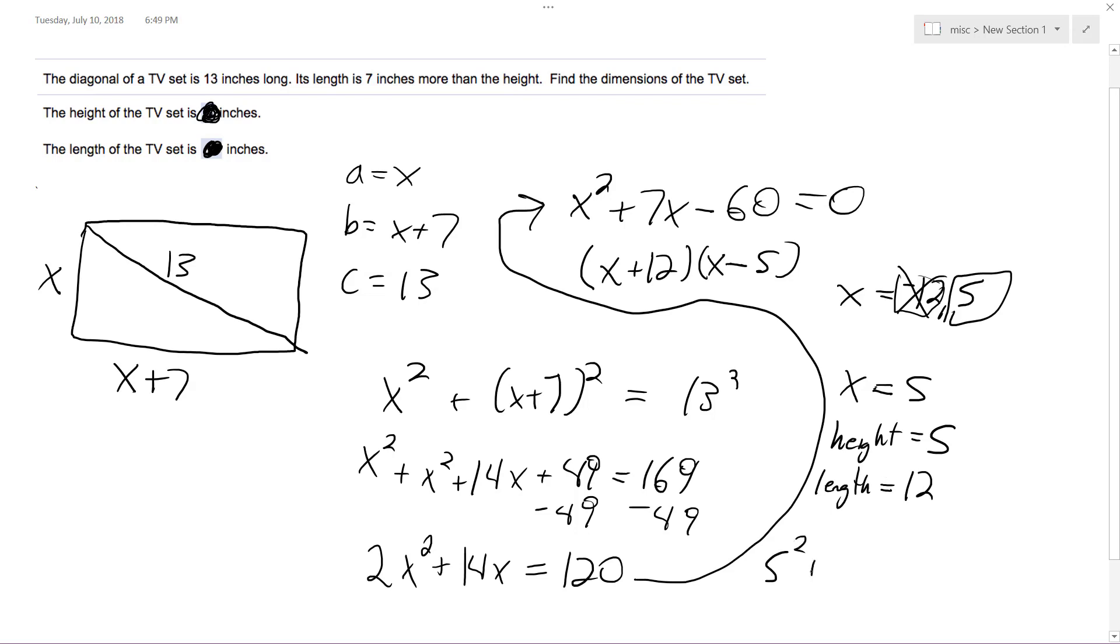So 5 squared plus 12 squared, we get 25 plus 144, which is equal to 169, which is the diagonal.